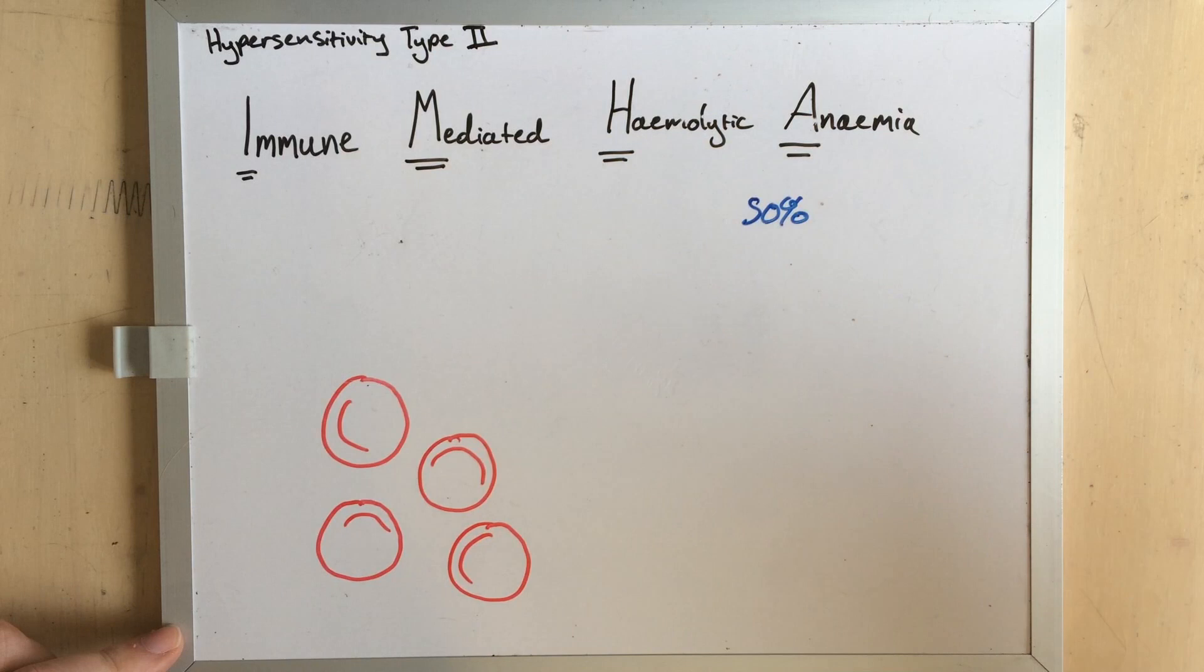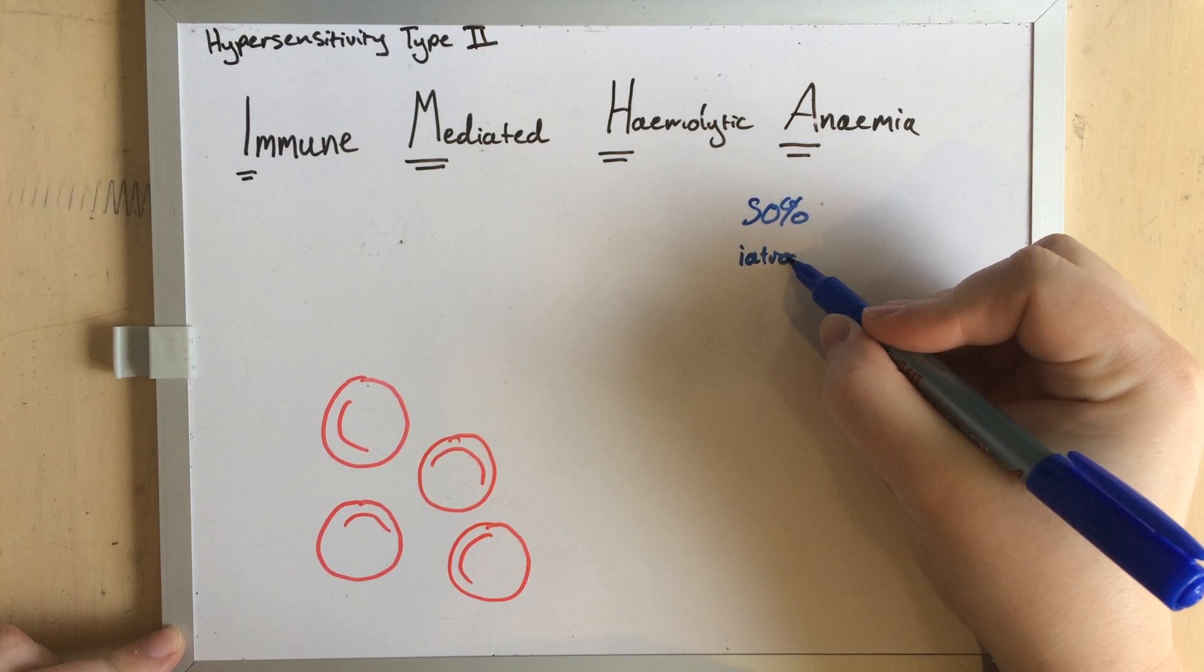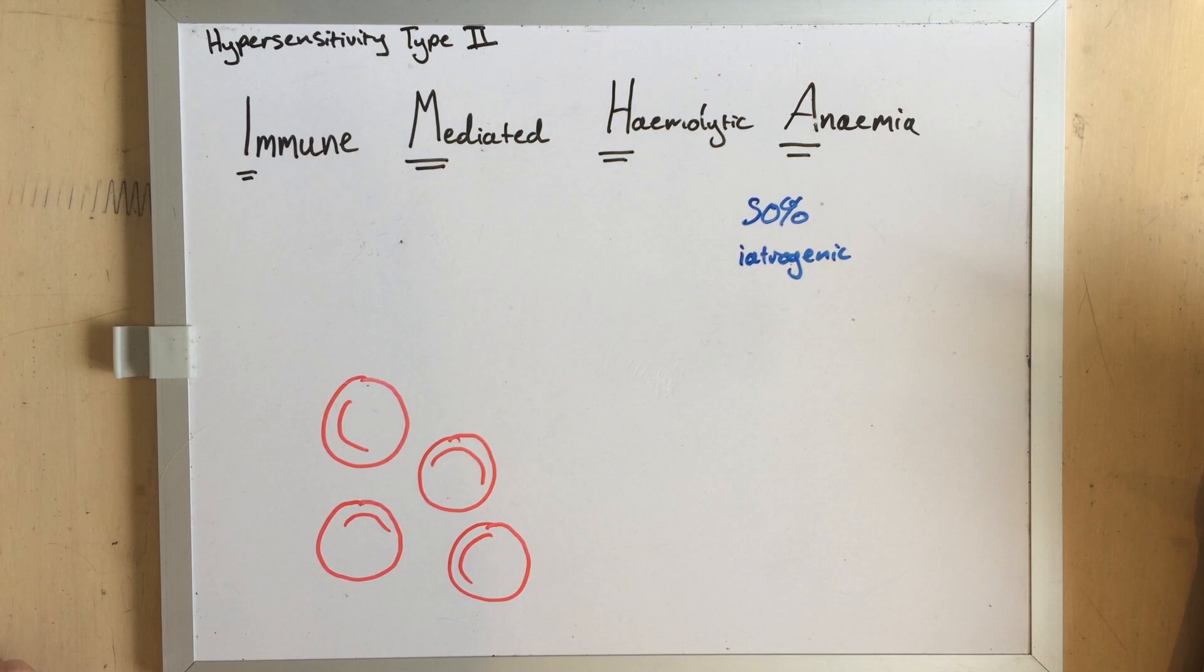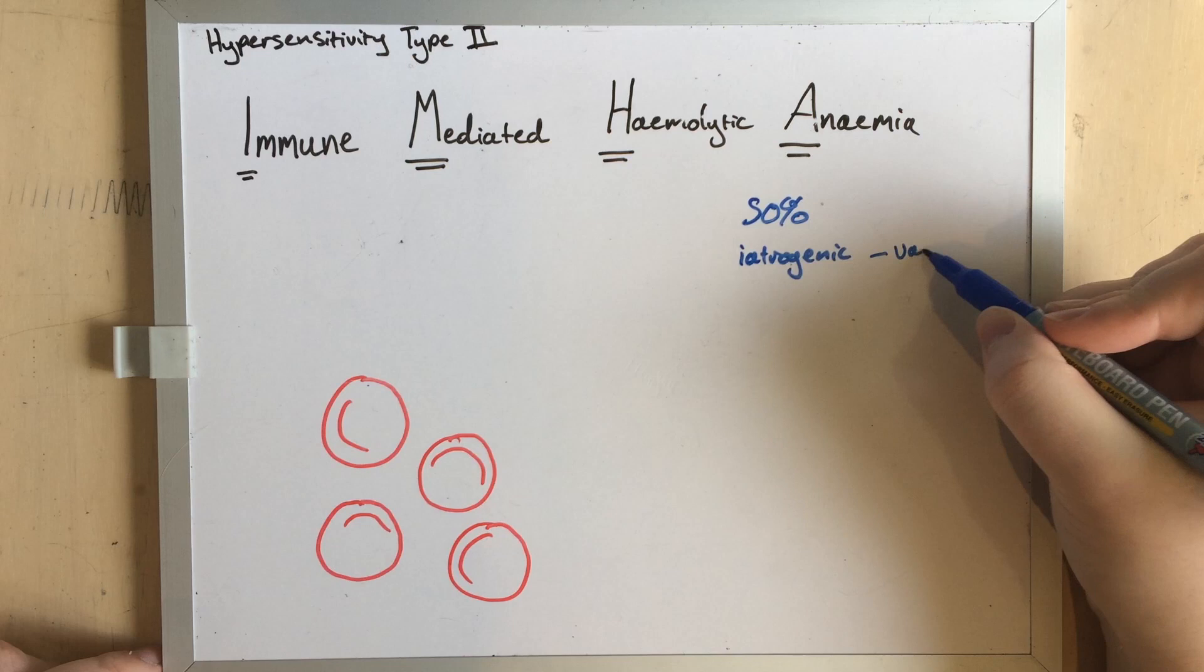The condition has a survival rate of only about 50%, which is not great, and it's a condition that's potentially iatrogenic, which means basically that a medical treatment might have triggered it. This is particularly relevant to our discussion around vaccines.